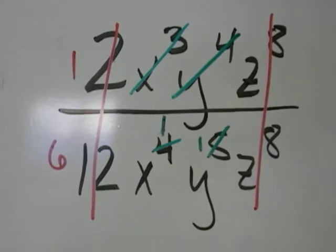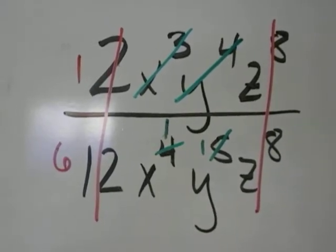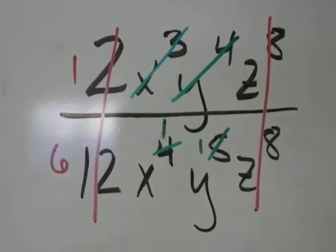Let's try it. 2 twelfths does reduce. They both divide by 2. The 2 becomes a 1 and the 12 becomes a 6.